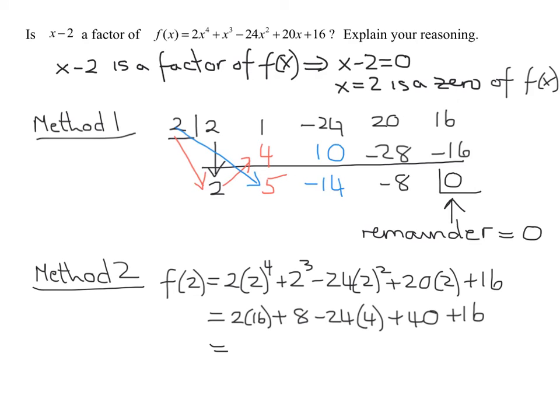So 2 times 16 is 32, plus 8, minus 24 times 4 is 96, plus 40, plus 16 is 56. So 32, let's add all my positive, 32 and 8 is 40, 40 and 56 is 96, 96 minus 96 is 0.